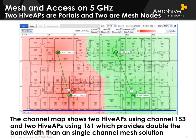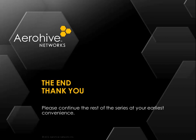APs must be on the same channel to communicate for meshing, just as clients must be on the same channel as the AP. The channel map shows two Hive APs using channel 153 and two using channel 161, providing double the bandwidth of a single-channel mesh solution. A single-channel mesh would require all APs on the same channel, creating more co-channel interference. AeroHive APs support both client service and automatic mesh failover simultaneously — other vendors require dedicating a radio to meshing, preventing client support. Thank you for watching this session on wireless topologies from AeroHive.